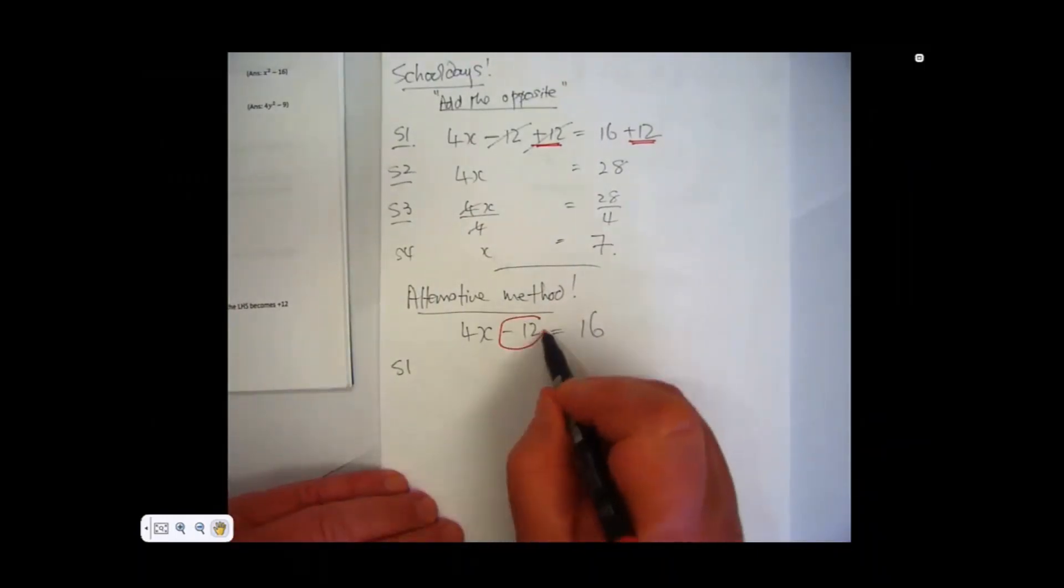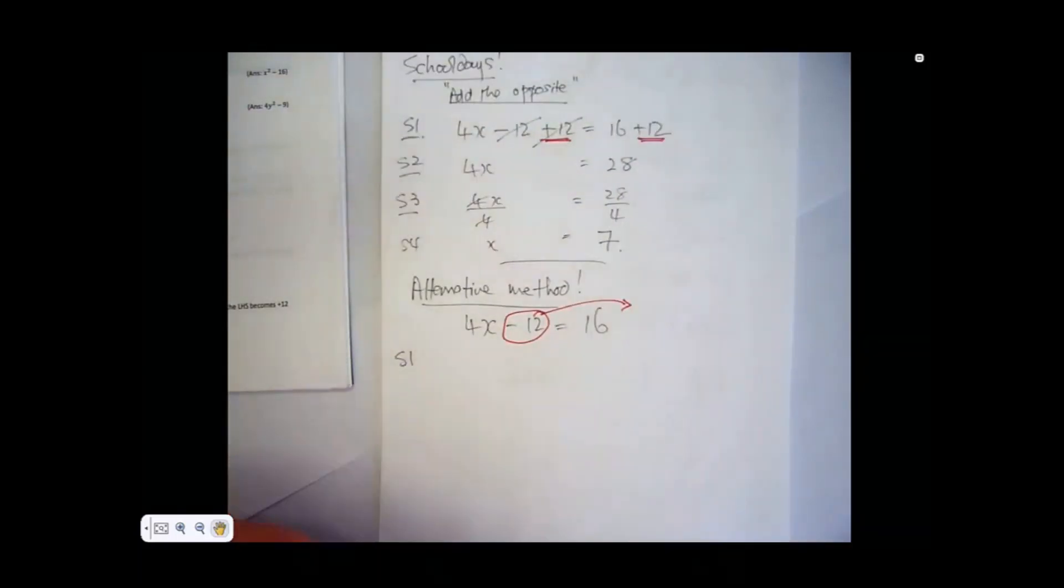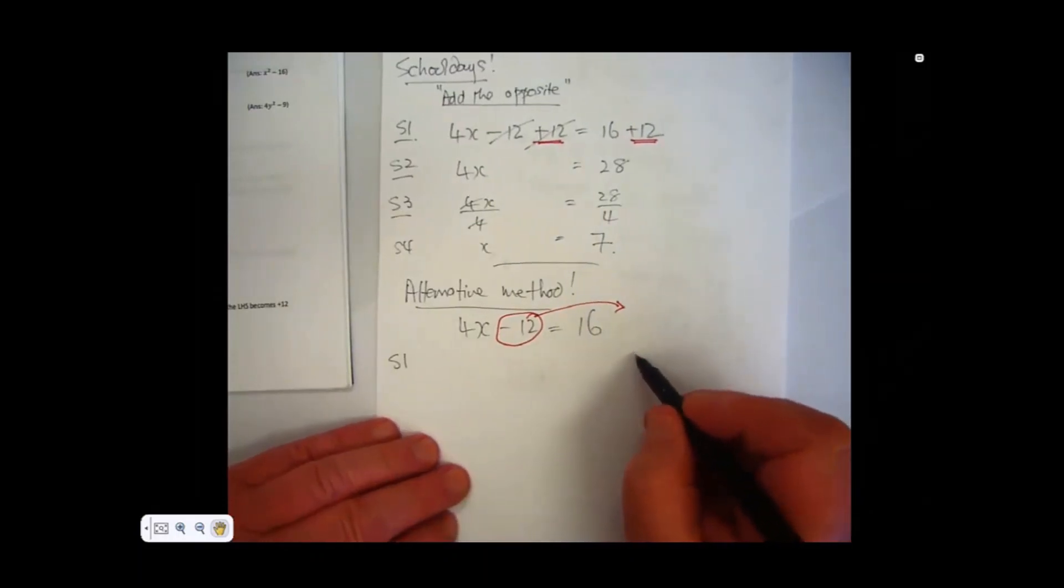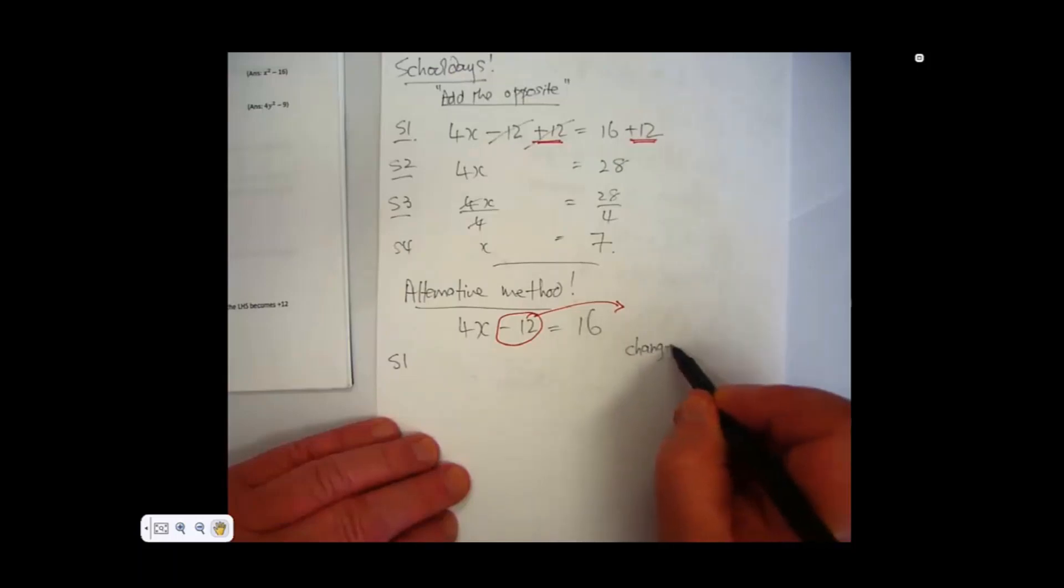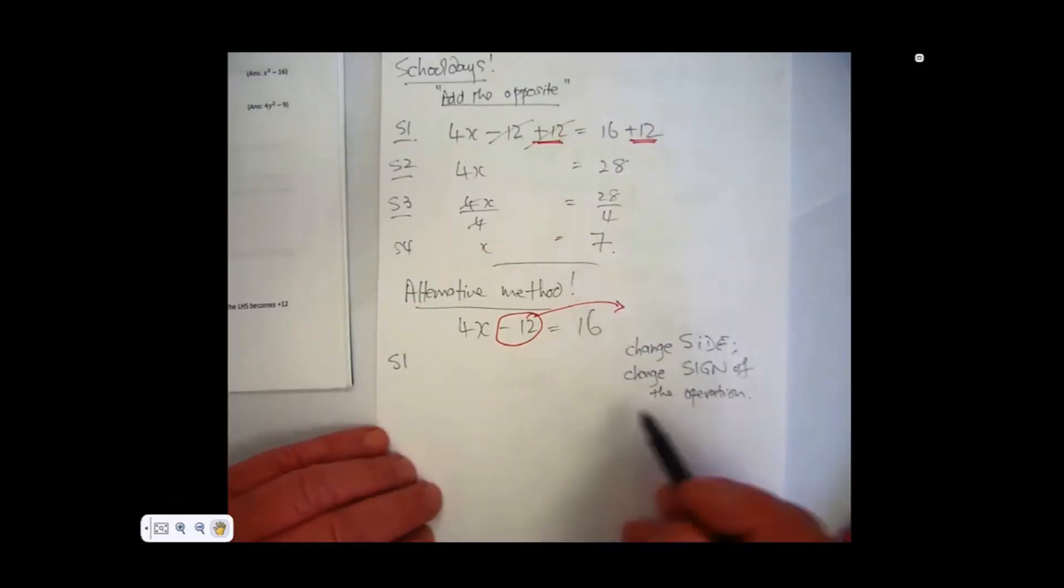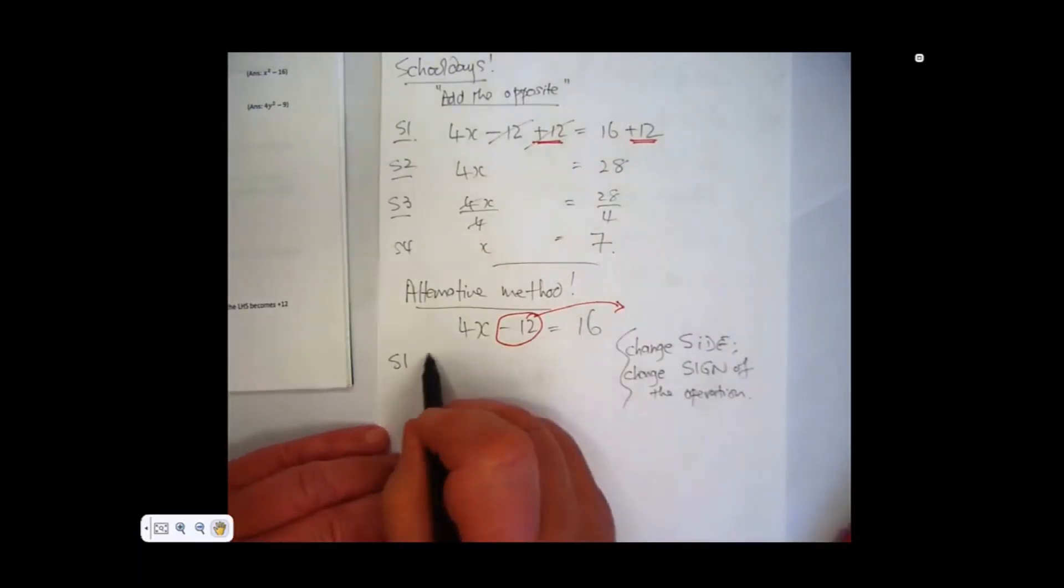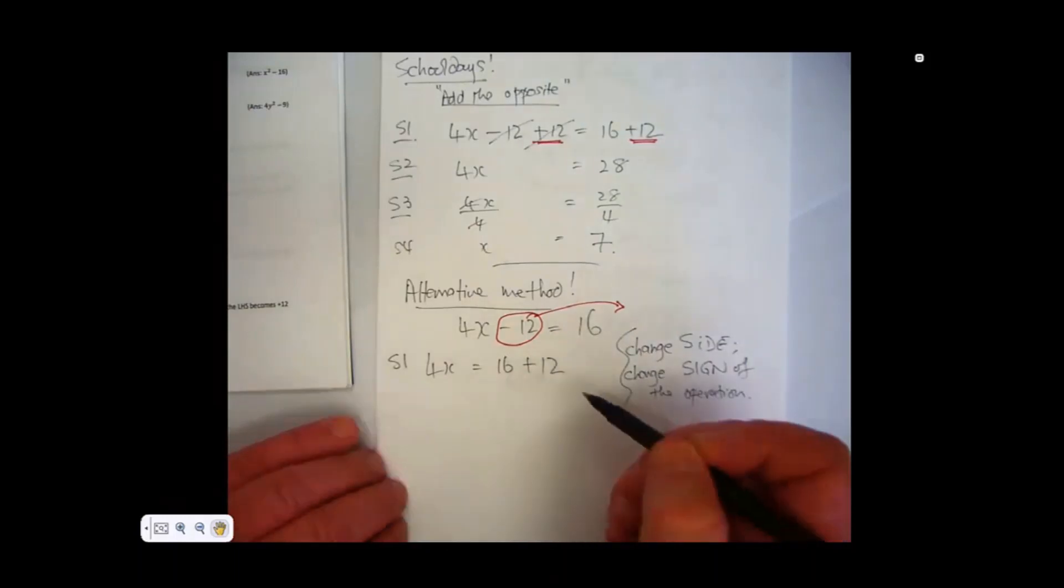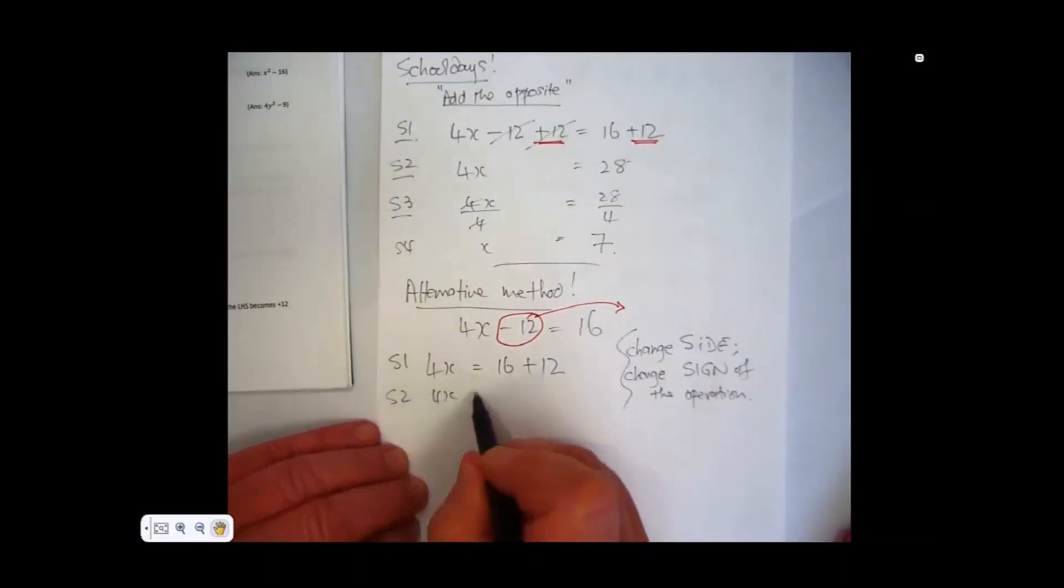Now my method here says this. If I can take this to the other side, this is much quicker. Now the rule that I'm using, and I'll write this down, it's in your book at the bottom of the page. It says, I can change side, but I must change the sign of the operation. And that's in your book right at the bottom of page 4. So applying this, this becomes very quick. We now have 4x equals 16. Minus 12 on this side becomes plus 12 on that side.